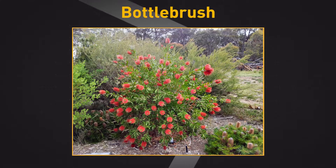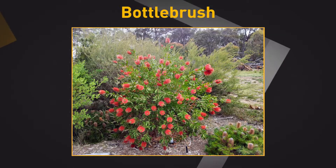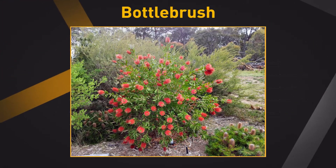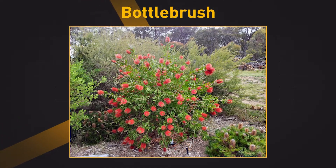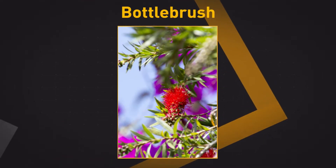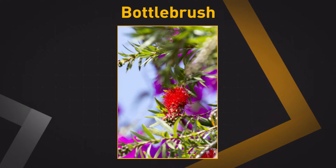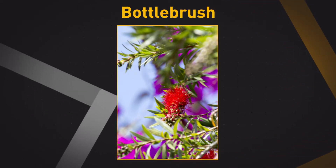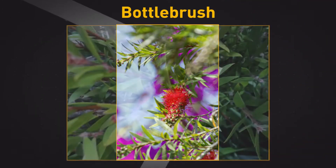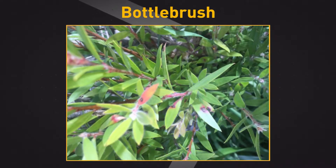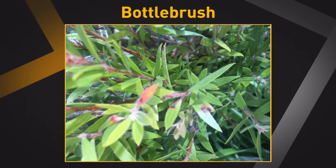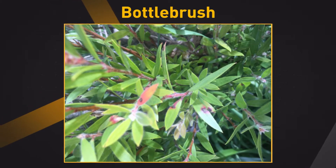Bottle brush. A small to medium sized woody plant or small tree. Leaves are narrow and slightly leathery with young growth being hairy. The mostly red flowers are stalkless and cluster tightly together at the branch tips, each with five petals. Bottle brush with myrtle rust has yellow pustules and red-brown lesions on the leaves.